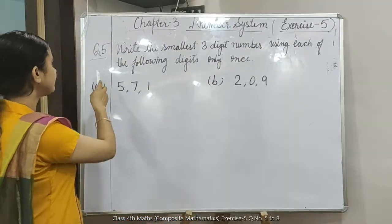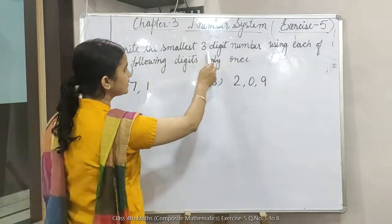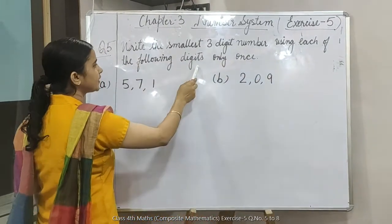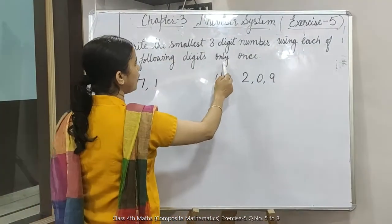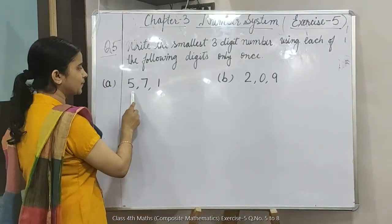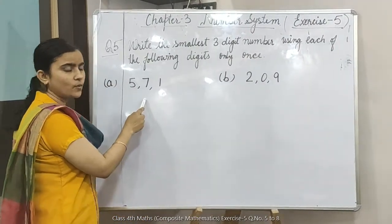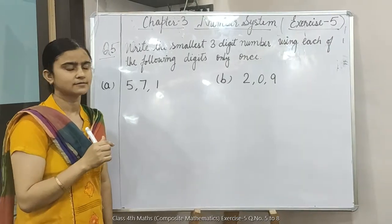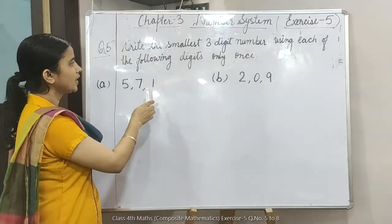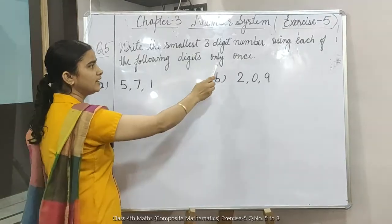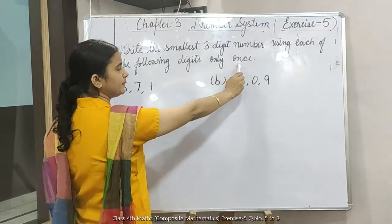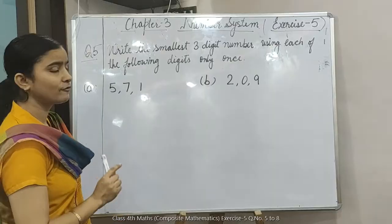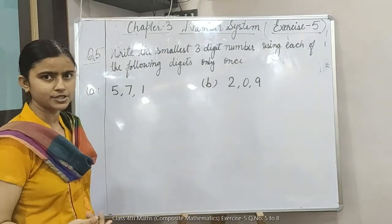Question number 5 is: write the smallest 3-digit number using each of the following digits only once. यानि कि यहाँ पर आपको कुछ digits दिये हुए हैं, और इन digits को यूज करते हुए आपको smallest 3-digit number बनाना है, और हर digit को आप एक ही बार use कर सकते हैं, यानि कि कोई भी digit repeat नहीं होना चाहिए।